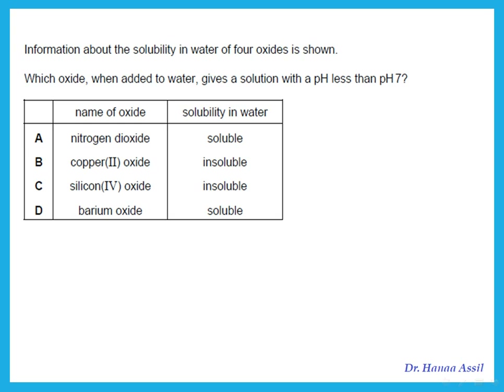Information about the solubility of four oxides in water is shown. Which oxide, when added to water, gives a solution with pH less than 7? A pH less than 7 means acidic, and acidic oxides come from non-metals. From the choices, nitrogen and silicon are non-metals; the others are metals. However, the oxide must also be soluble in water to give a solution. Nitrogen dioxide is soluble in water and gives a pH less than 7.